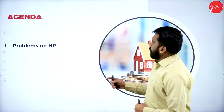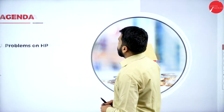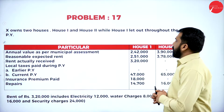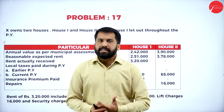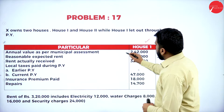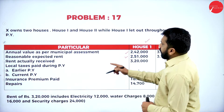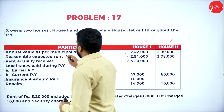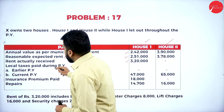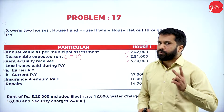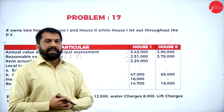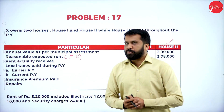Today we'll work out one problem and consider certain expenses — why and for what reason. The agenda is simple: problems on house property. Problem number 17 involves two houses — house one and house two. House one is let out throughout the previous year. We have municipal assessment value, reasonable rent (fair rent), actual rent received, and local taxes paid for two periods: the earlier previous year and the current previous year.